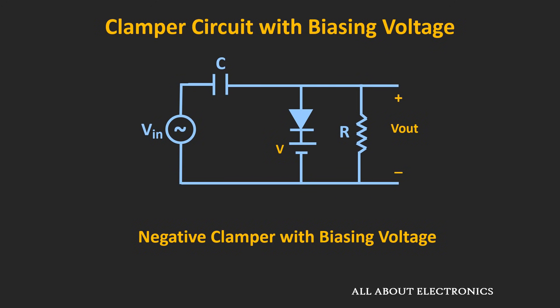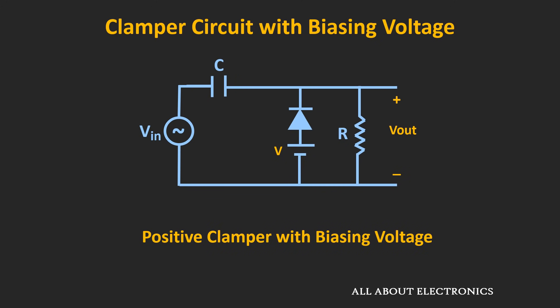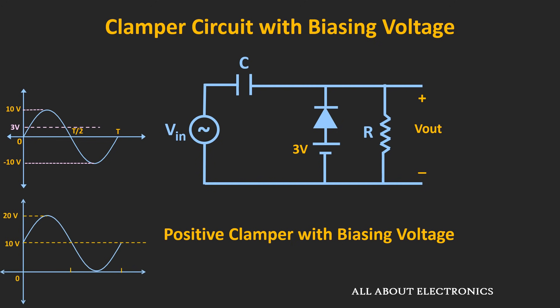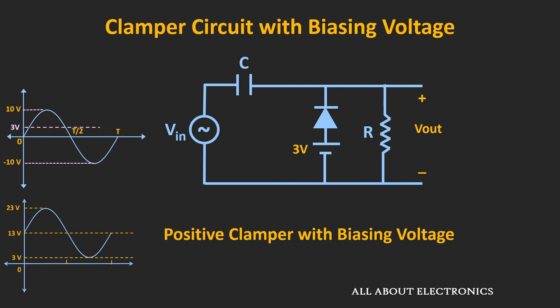Similarly, we can also design a positive clamper circuit with the biasing voltage. For the analysis, we will assume a sine wave as an input. To easily analyze this circuit, let's take some numbers: the biasing voltage is equal to 3V and the input waveform is varying from 10V to minus 10V. In this circuit, if the biasing voltage is not there, then the output waveform would get DC shifted by 10V. But due to this additional 3V, this waveform will get further shifted by 3V, and due to that we will get this type of waveform.